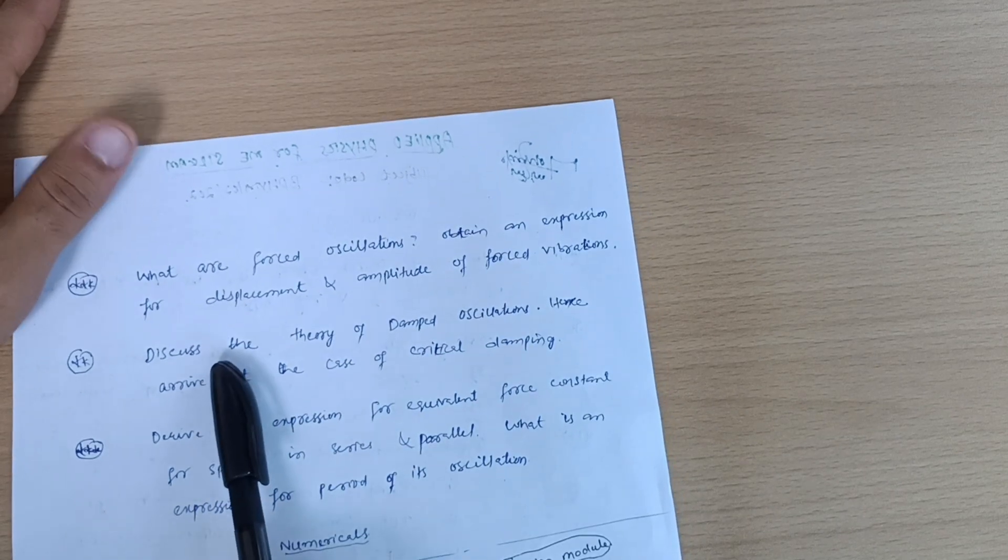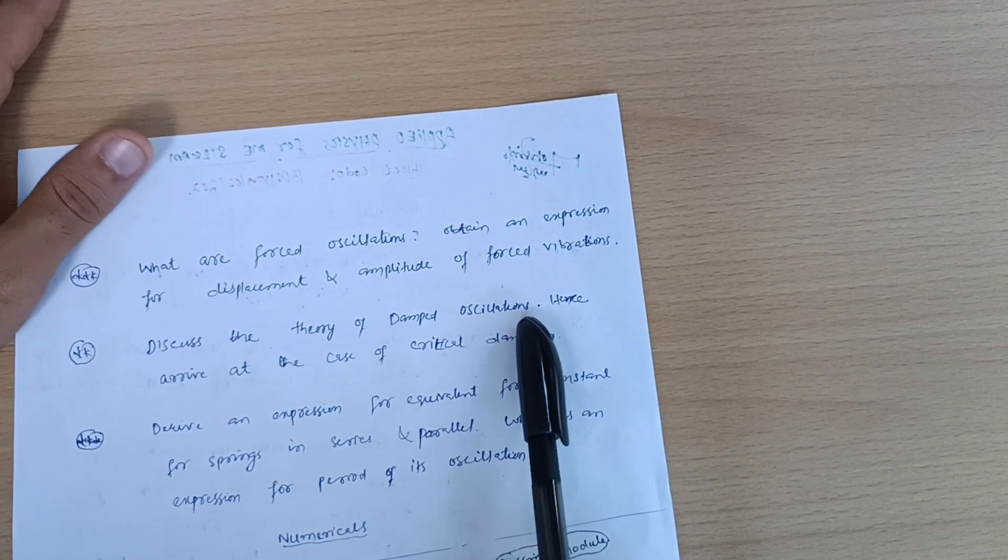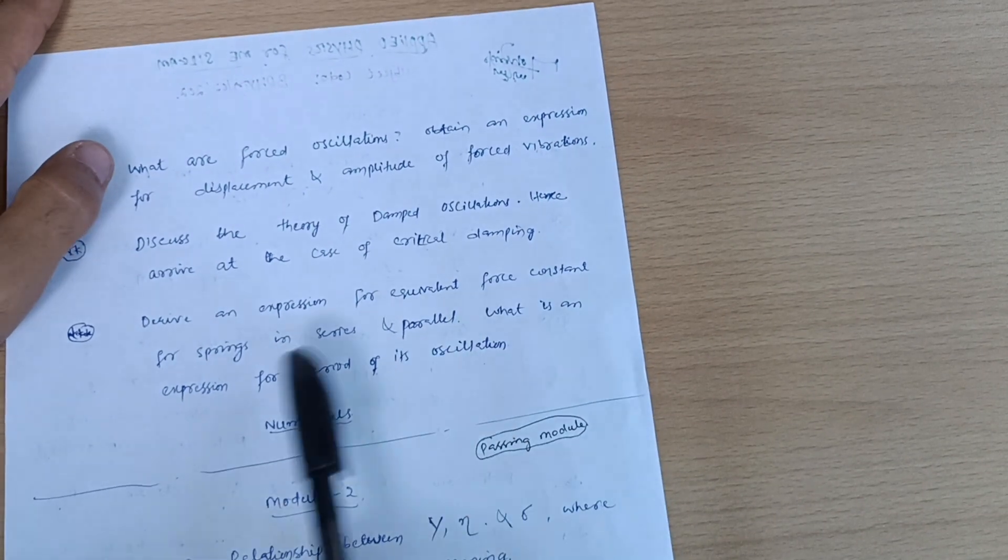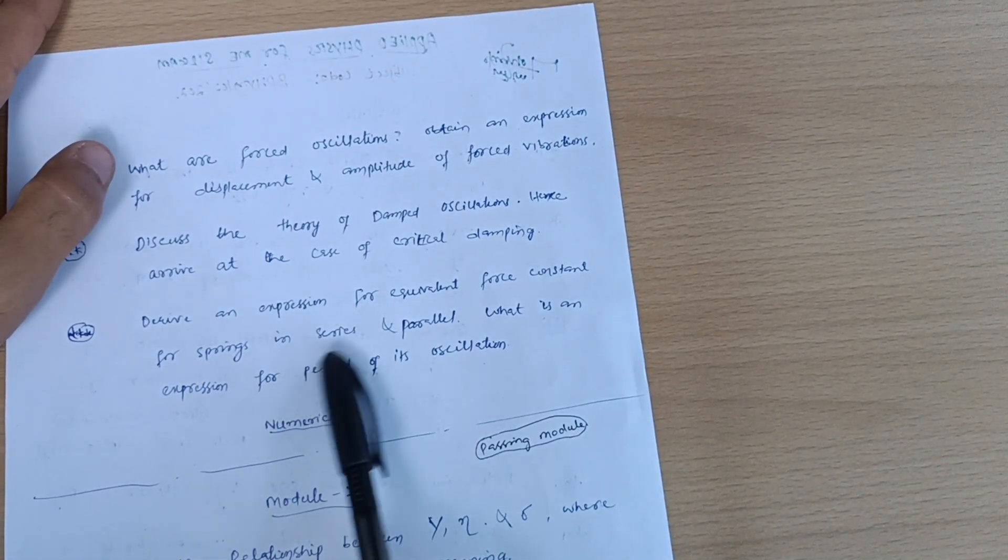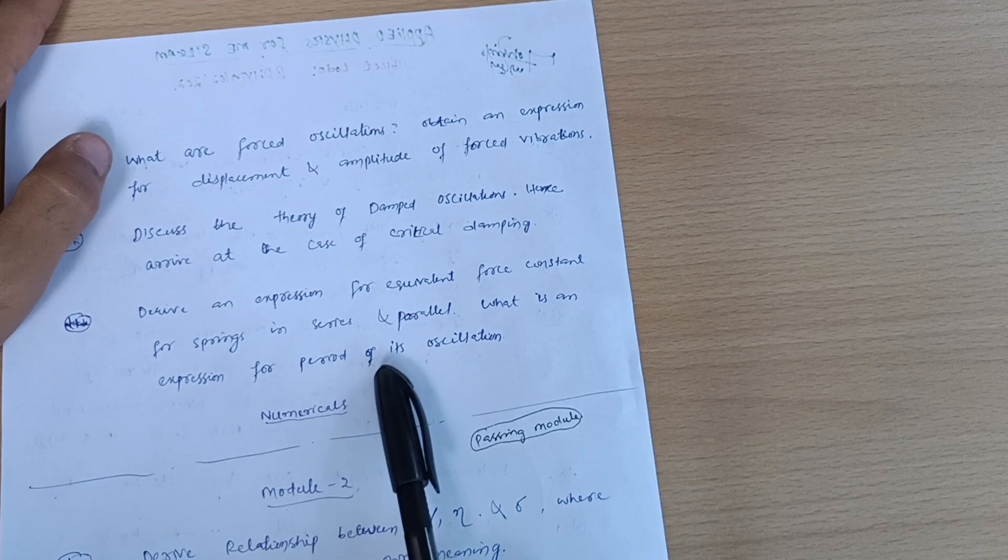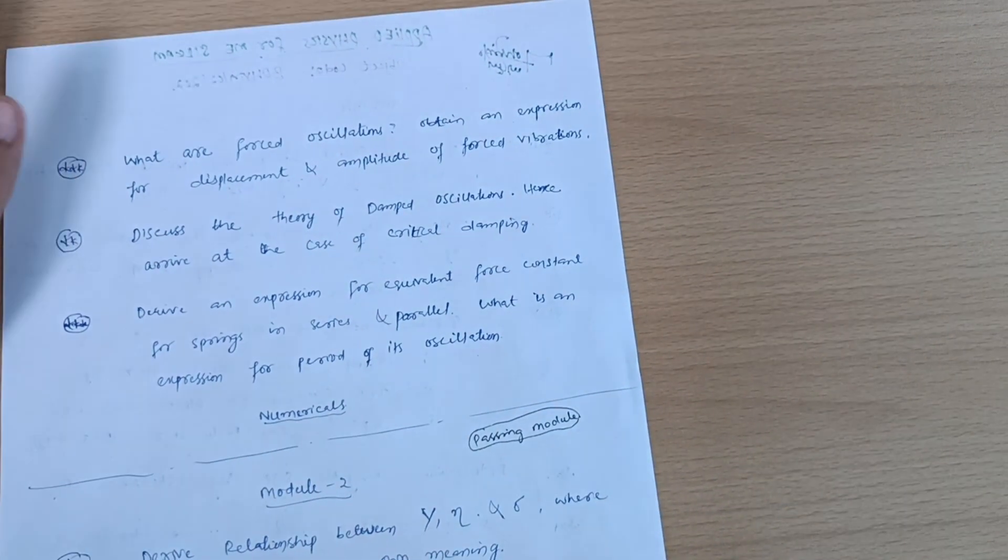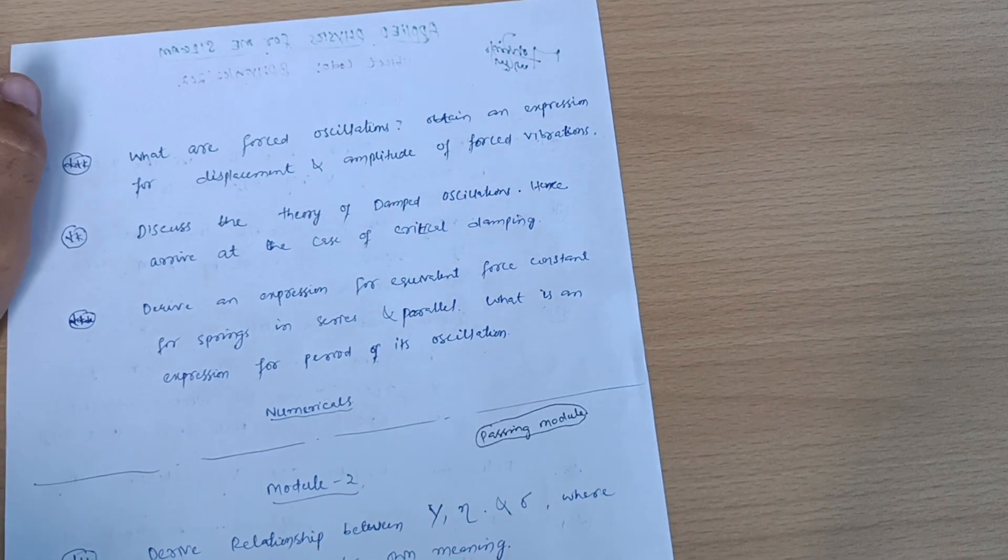Also discuss the theory of damped oscillations, hence arrive at the case of critical damping. Derive an expression for equivalent force constant for springs in series and parallel. What is an expression for period of its oscillation? This is again an important one. If you are content with the numerical part, go through it. If you find some easiness, you should surely go for the numericals also.